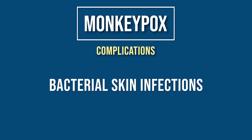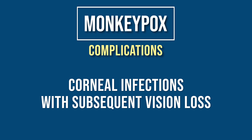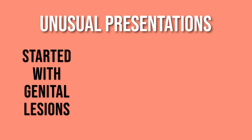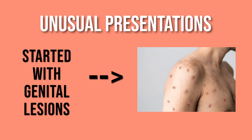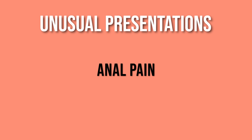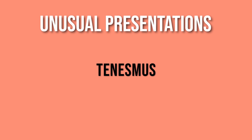Sometimes monkeypox can cause complications like secondary bacterial infections, pneumonia, and sepsis. It can also cause infection of the cornea of the eye, resulting in loss of vision. During this current outbreak there have been some unusual presentations — for instance, some people started with genital lesions that later spread to their trunk and face, while in other instances it never spread to the face, arms, or legs.